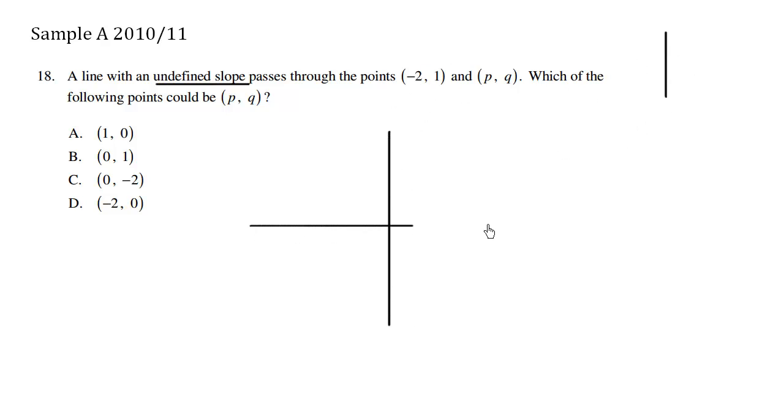So if we have a graph, and this is (-2, 1) approximately here, (p, q) must somehow generate a vertical line. So this here is (-2, 1).